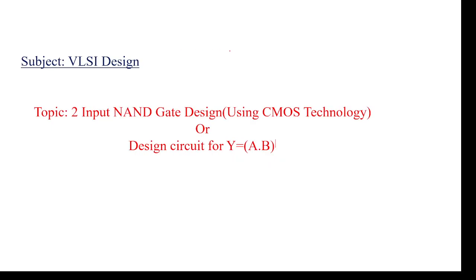I am going to discuss the two-input NAND gate design using CMOS technology. The NAND gate symbol has two inputs A and B, and the output is Y = (A·B)̄. This is only the symbol. If you want to design the internal circuit, I will explain how to design it.